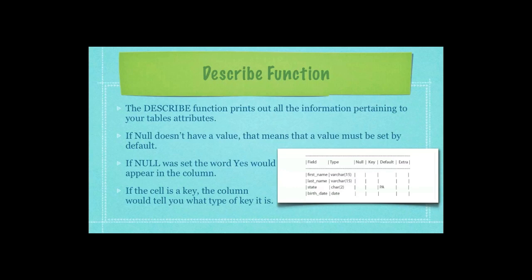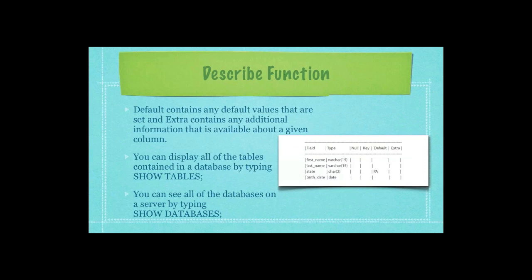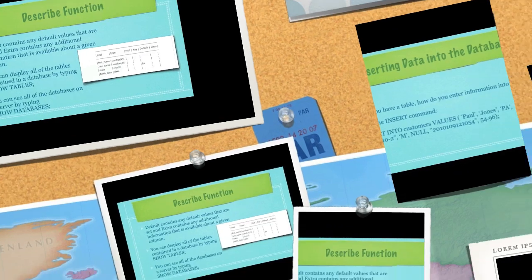If the cell is a key, the column would tell you what type of key it is, and I will cover keys in a future tutorial. The default contains any default values that are set, and extra contains any additional information available about a given column. You can display all the tables in a database by typing show tables, and you can see all the databases on the server by typing show databases.